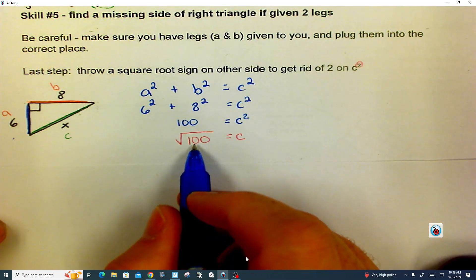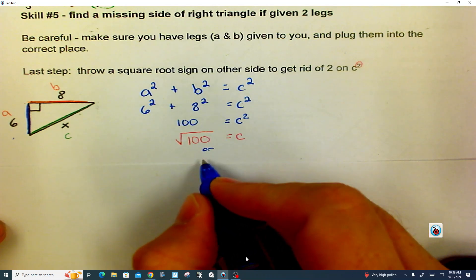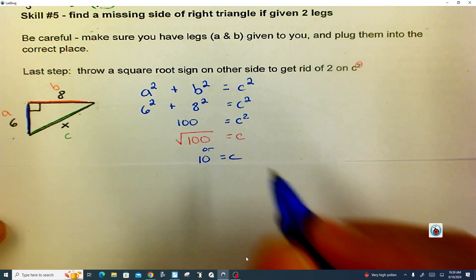And so this is the answer. C is the square root of 100. Or a better way of writing it is just 10 equals C.